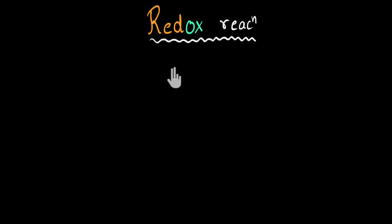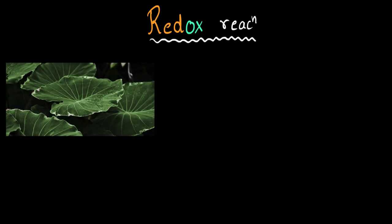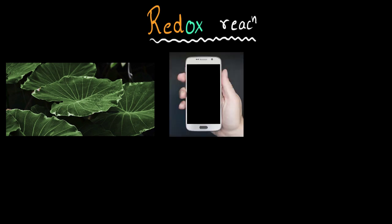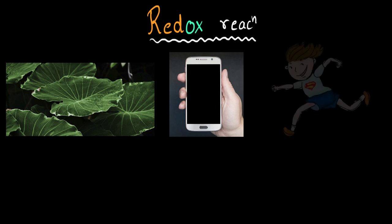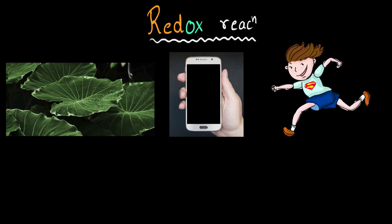In this video, we will be talking about a new type of reaction called redox reaction. These are very commonly found. Photosynthesis is an example of redox reaction. The chemical reaction that happens within a battery which powers your phone or laptop devices is also an example of redox reaction. In fact, the type of chemical reaction that happens within you to break down sugar and give you energy to run and play is also an example of redox reaction.